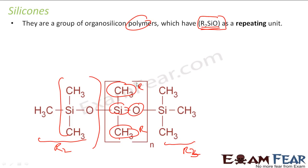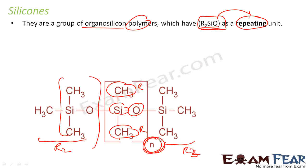What I'm saying is, silicones are nothing but organosilicon polymers which have an R2SiO repeating unit. Please note two things: the R2SiO group has to be there, and it has to be repeating — see the 'n' subscript. Only then is it called silicones.